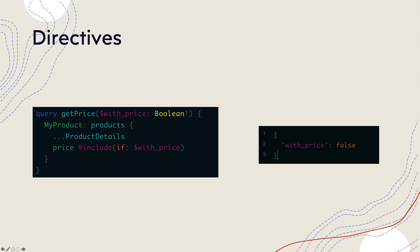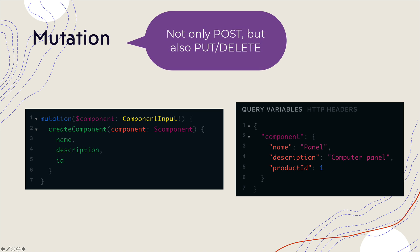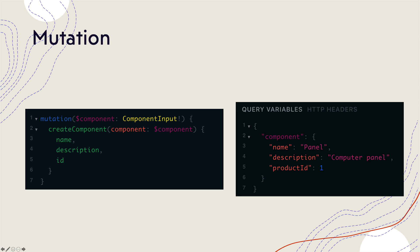Finally, mutations. All this time we have been talking about GET operations, but using mutations we can do POST operations. For example, to create a new component, you use the mutation keyword, specify the variable — dollar component of component input — and then call the mutation name, which is 'createComponent'. You pass in the whole component and it will return the name, description, and id once it is created. We'll see all these advanced concepts in greater detail in the demonstration.